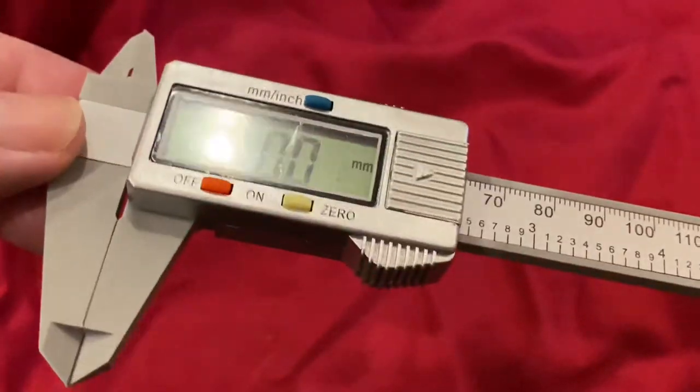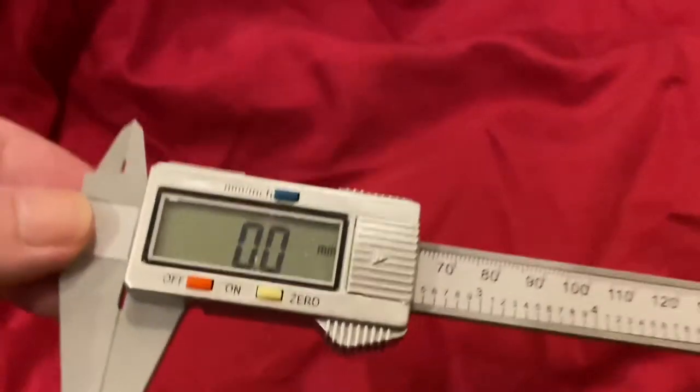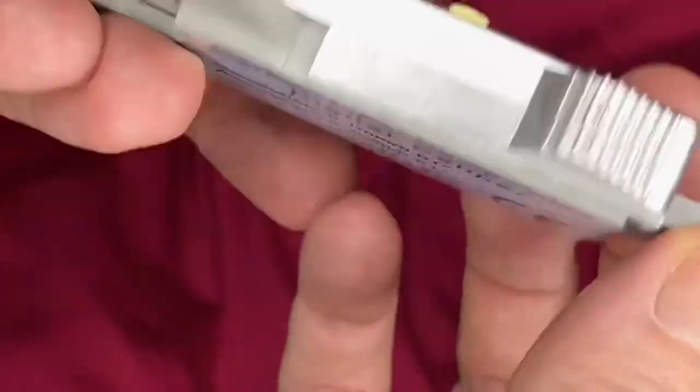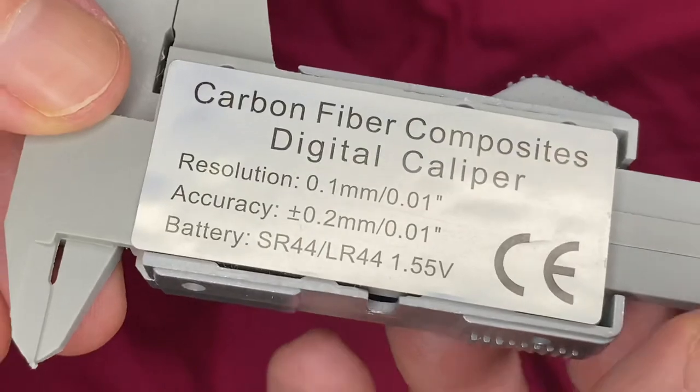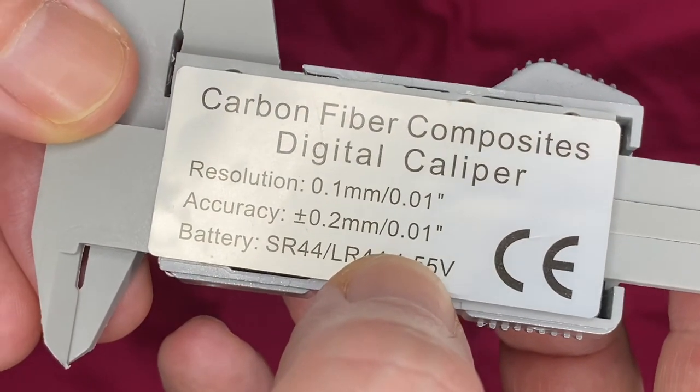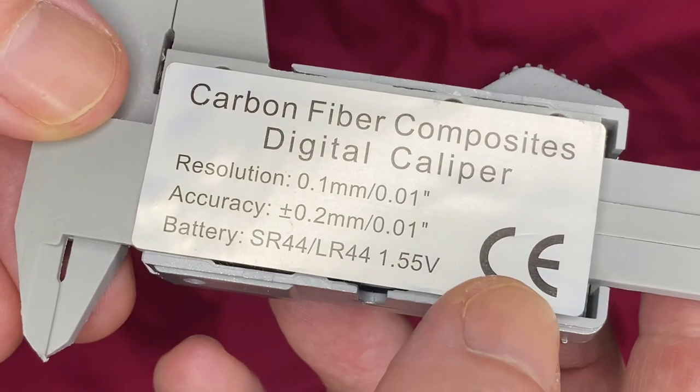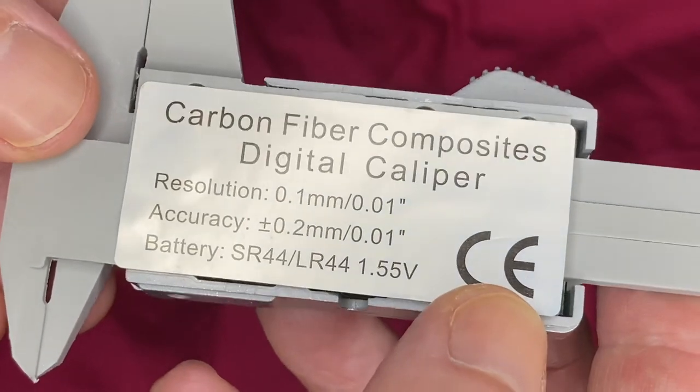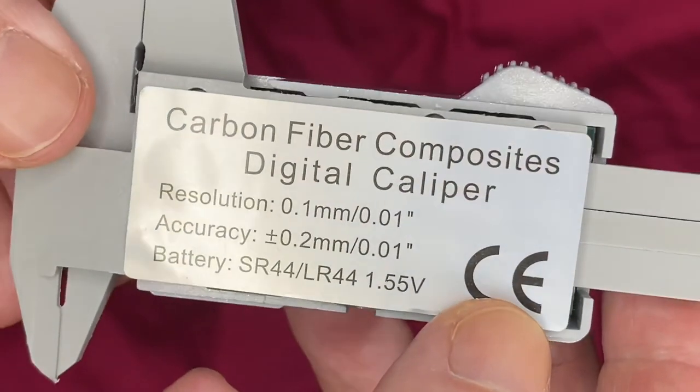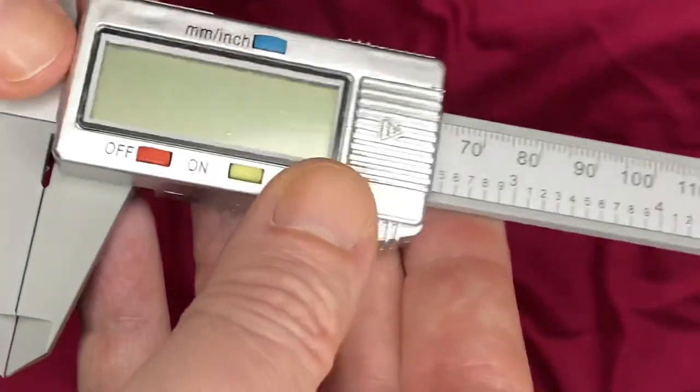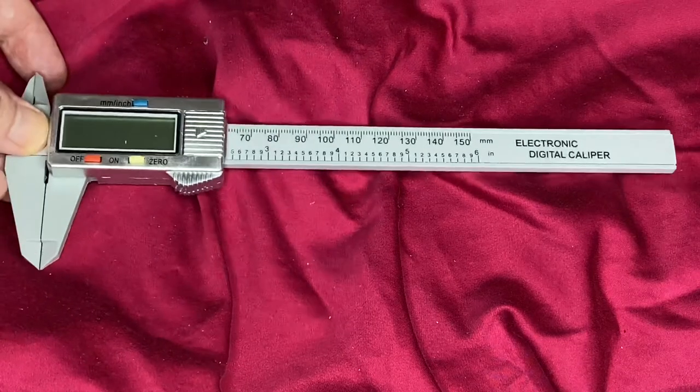Finally, on the back we can see it actually says the accuracy is 0.2 of a millimeter, and that's actually a pretty accurate accuracy rating because that's what we're seeing is 0.1 to 0.2 millimeters of difference typically. So pretty good, pretty good, pretty impressive for the price. Great.